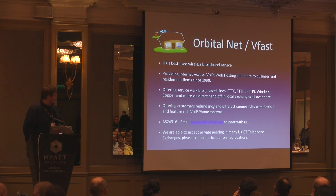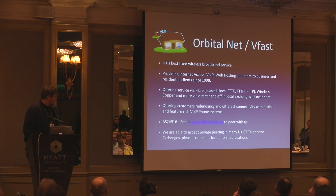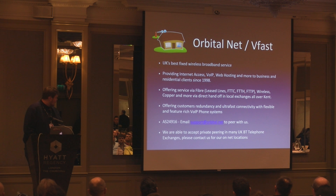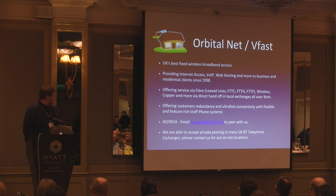I work for OrbitalNet and VFAST. The services we offer include fiber, wireless, leased lines, FTTC, fiber to the cabinet, fiber to the home in new build houses, and soon fiber to the premises, thanks to BT Openreach. We've got direct handoff in exchanges all around Kent. We offer redundancy, VoIP, and much more. And there's our AS as well — if you're looking for someone to peer with, we can peer in London and many telephone exchanges.